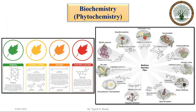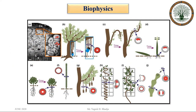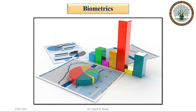Another branch is biochemistry, also known as phytochemistry, in which we study the chemistry of plants. Another branch is biophysics, which studies plant activities on the basis of physics principles. Another branch is biometrics, in which we study the statistical analysis of results from biological experiments.